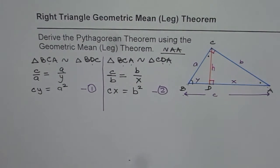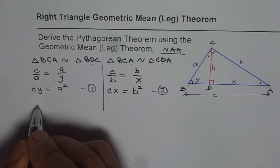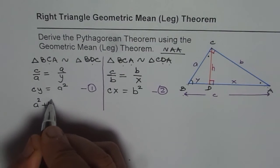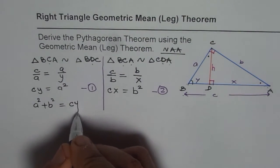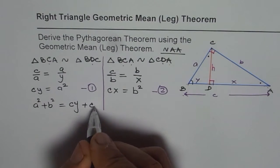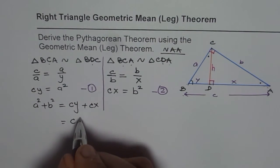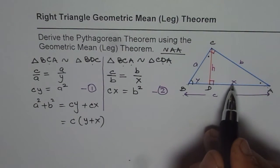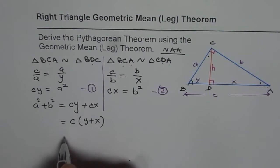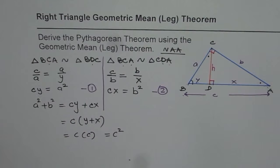Now we'll prove the Pythagorean theorem. So let's add these two equations. That is, A square plus B square is equals to what? A square is CY, right? And B square is CX, correct? Now we can take C common. Let's factor it out. So we get Y plus X. What is Y plus X? Y plus X is C. So this could be written as C times C or C square, right?